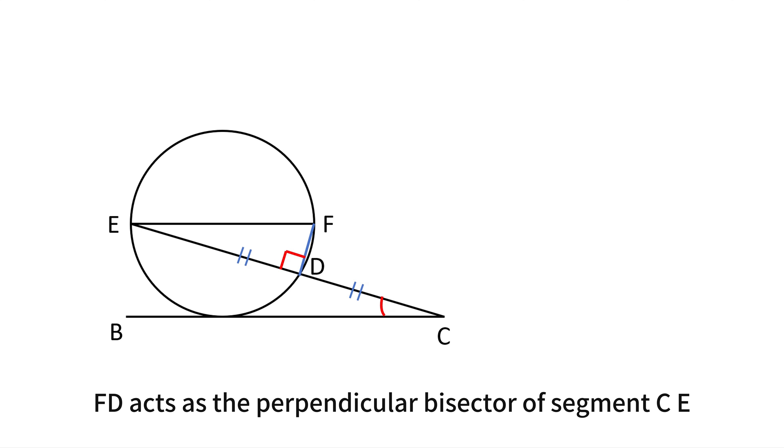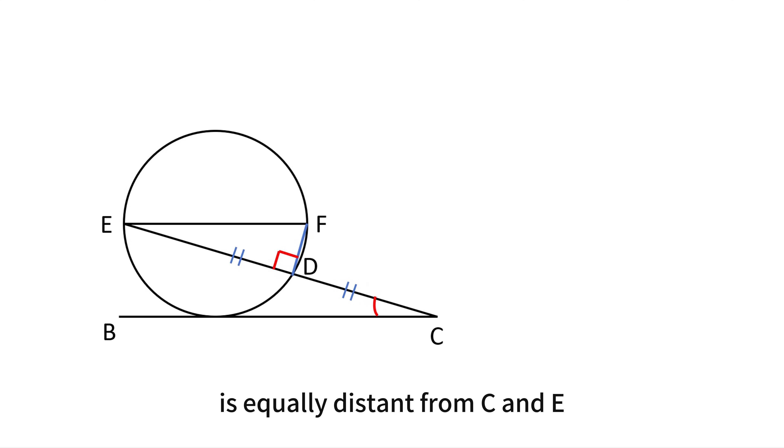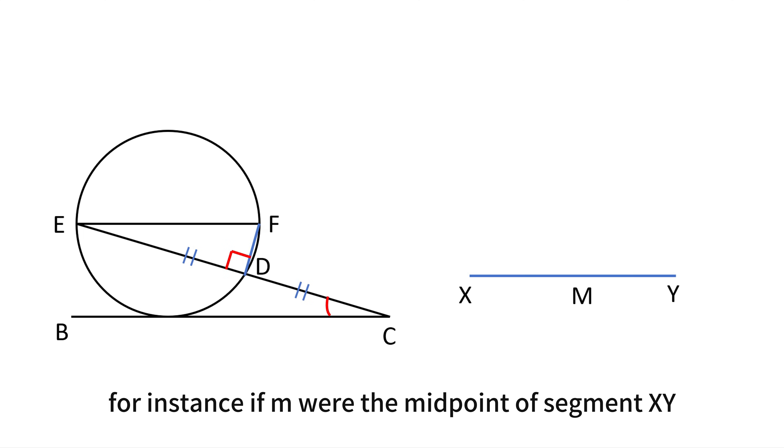By perpendicular bisector property, any point on this bisector is equally distant from C and E. For instance, if M were the midpoint of segment XY and we drew a perpendicular line through M, every point on that line would be equally far from X and Y.